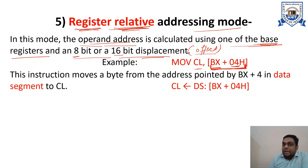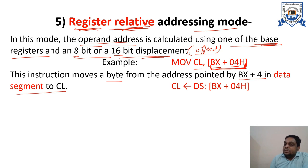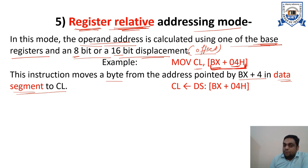Here, BX + 04 gives you the address of the operand, and that will be transferred into CL. This instruction moves a byte from the address pointed by BX + 4 in the data segment to CL. The data segment is the segment in which all data items are stored. So BX + 4, this address from the data segment, will be transferred to register CL.